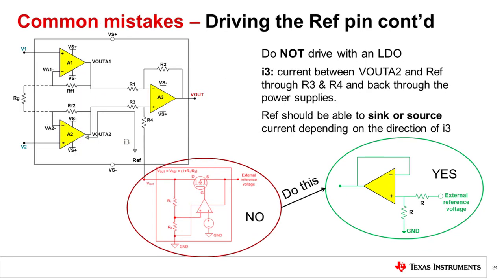Also, since the reference pin needs to be able to sink and source current as we saw in the previous slide covering current consumption, using a low dropout regulator or an LDO may be unacceptable since it can only source current. Again, a buffer or a voltage reference is usually needed to drive the reference pin on an IA.